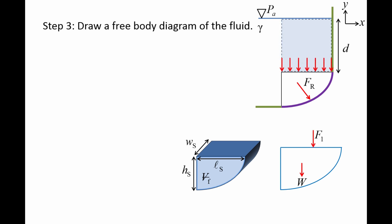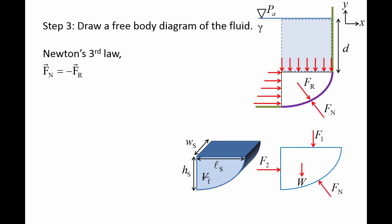We will call this force W. There is a pressure force caused by the weight of the fluid above, which acts at the top planar surface, and we will call this force F1. There also is a pressure force acting on the left planar surface, which we will call F2. Newton's third law tells us if the fluid exerts a force Fr on the wall, then the wall exerts an equal and opposite force on the fluid. This normal force will be denoted as Fn. So, if we can find Fn, we will know the resultant force Fr.